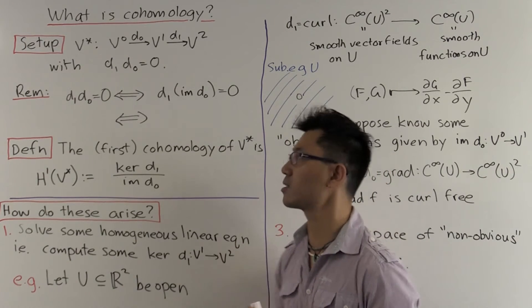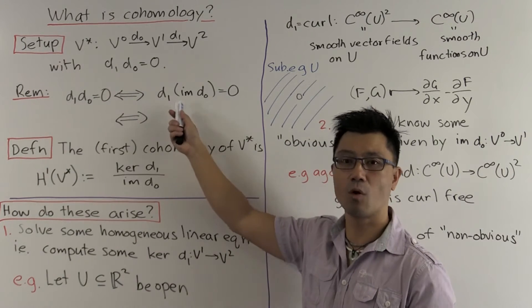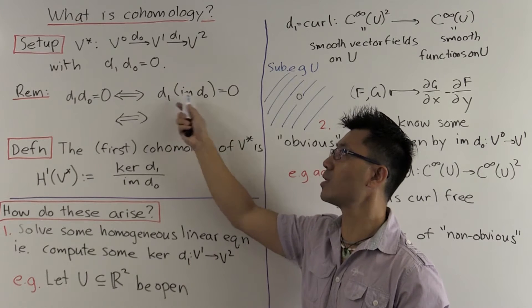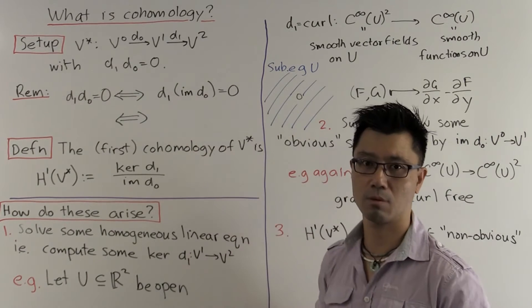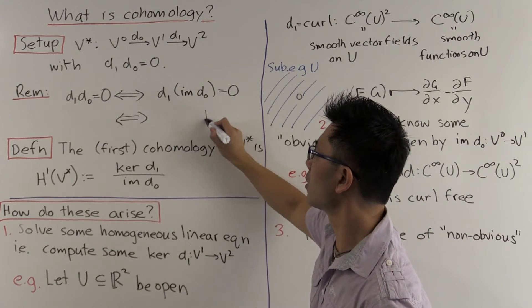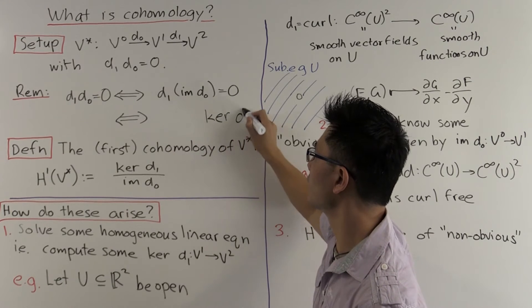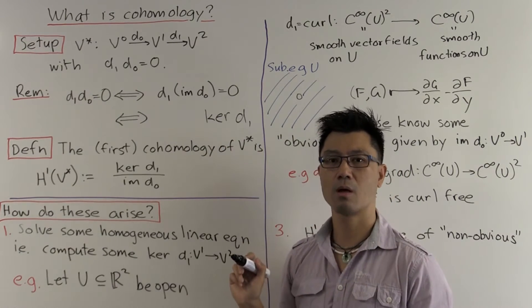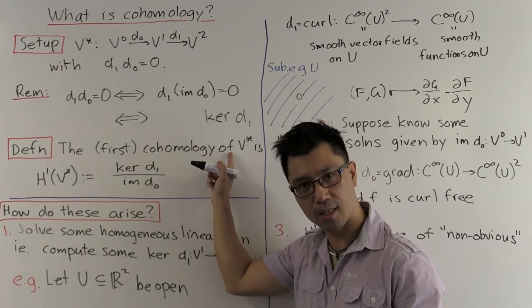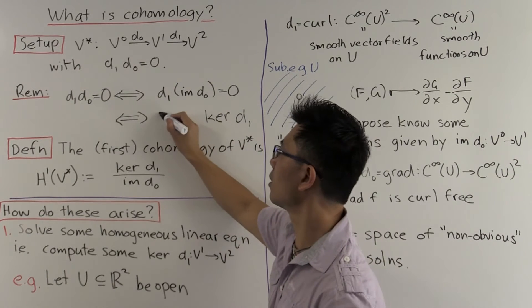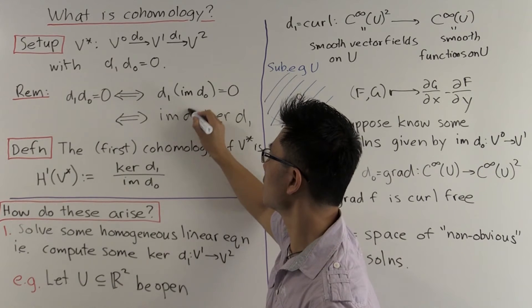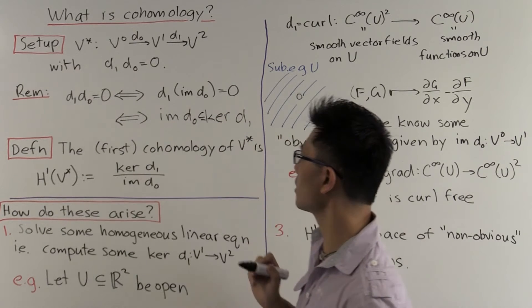What's another way of stating this? What's the set of all vectors such that D1 sends it to zero? That's just the kernel of D1. And so the image of D0 has to be contained inside that kernel.